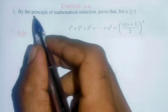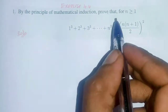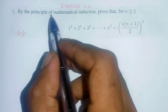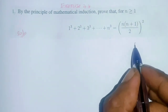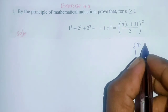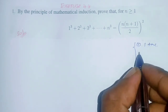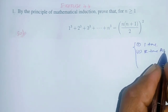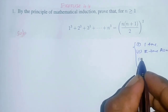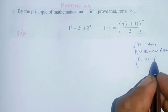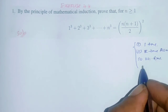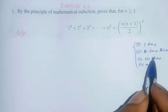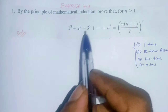Exercise 4.4, question number 1: by the principle of mathematical induction, prove that for n greater than or equal to 1. We will verify four conditions: first, n=1 is true; second, k value is true; third, k plus 1 is true; and fourth, n value is true. We will prove this using the principle of mathematical induction method.